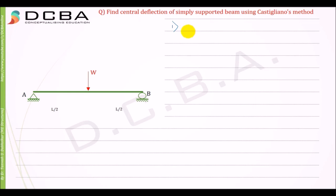So the load causing the deflection is basically our W. Load causing deflection is equal to W.